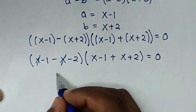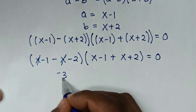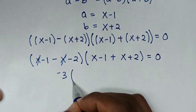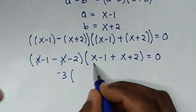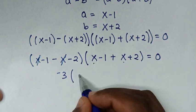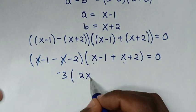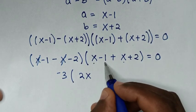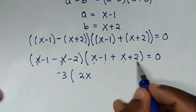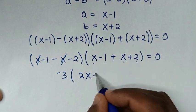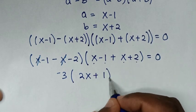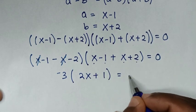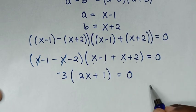Negative 1 minus 2 is negative 3. In the second bracket, x plus x is 2x, and negative 1 plus 2 is positive 1. So we have negative 3 times (2x plus 1) equals 0.